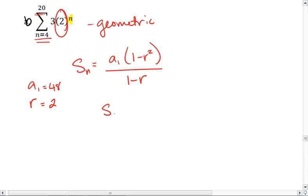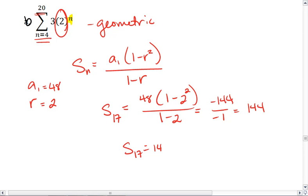Thus, to solve for this—17 terms—we take 48 times 1 minus 2 squared, all over 1 minus 2, which gives us negative 144 over negative 1, and that entire summation is 144.